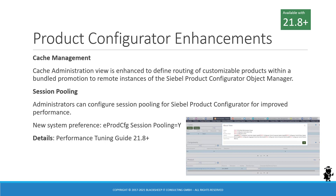Product configurator enhancements are twofold. First, there is a new set of fields in the cache administration view allowing administrators to define routing of customizable products with bundled promotions to remote instances of the Siebel product configurator object manager. Session pooling is a new feature — there is now a new system preference which you can turn on or off: eProd CFG session pooling, with a yes or no flag. If enabled, administrators can configure session pooling for the product configurator object manager for improved performance. For details, check out the 21.8 or later performance tuning guide.